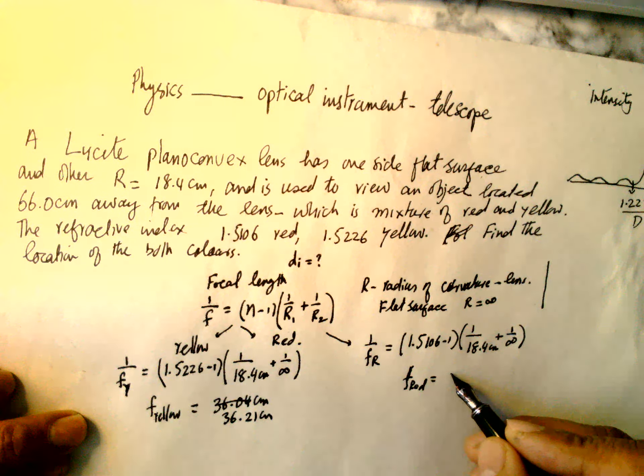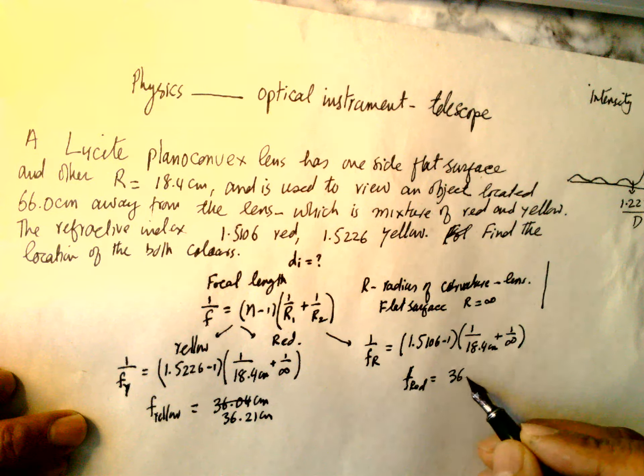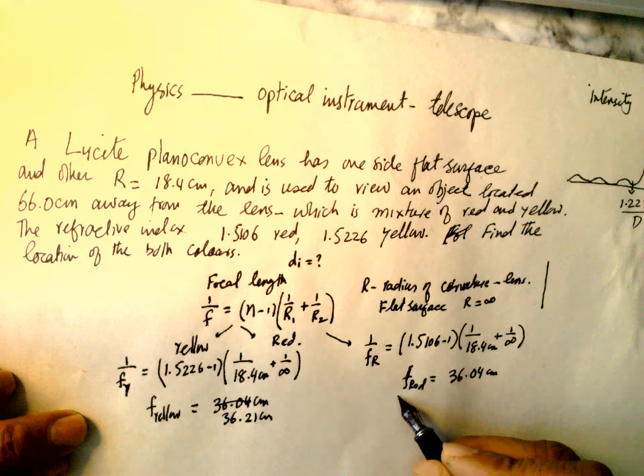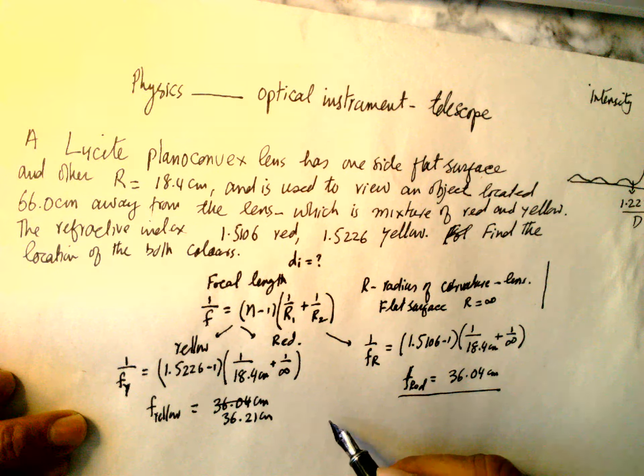36.21 and this one is 36.04 - 36.04 cm. So these are the two focal lengths and then we have to find the image distance.